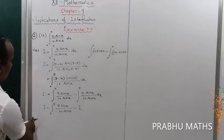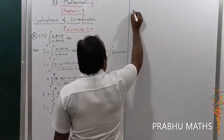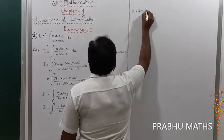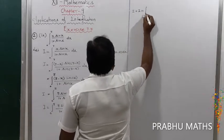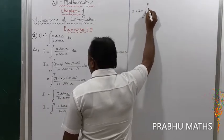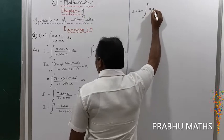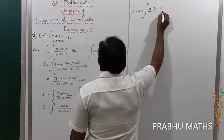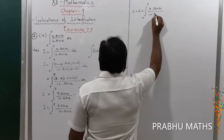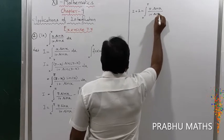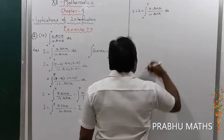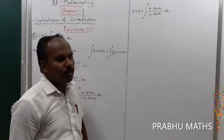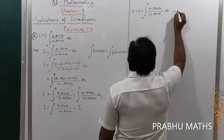The second integral is again I, so moving it to the left side: I plus I equals integral from 0 to π of π times sin x divided by 1 plus sin x dx. So 2I equals integral from 0 to π of π sin x divided by 1 plus sin x dx.